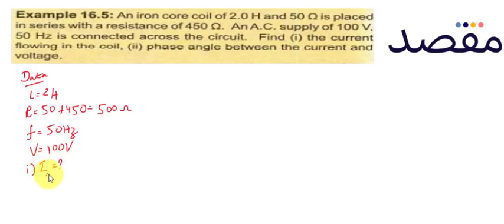What we need to know in AC is the RMS. Number two, phase angle phi.